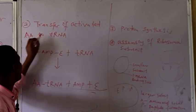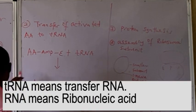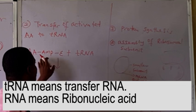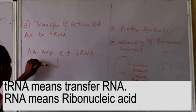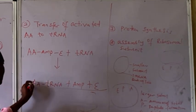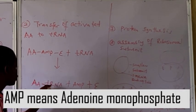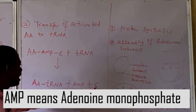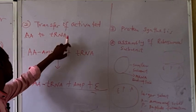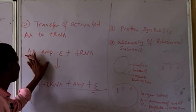The second step is the transfer of activated amino acid to tRNA. The activated amino acid complex will be transferred to tRNA. The equation is: activated amino acid + tRNA → amino acid attached to tRNA, and AMP will be released along with the enzyme.